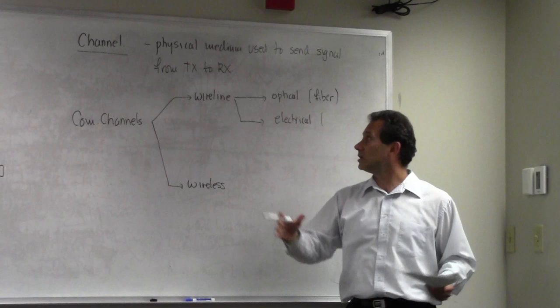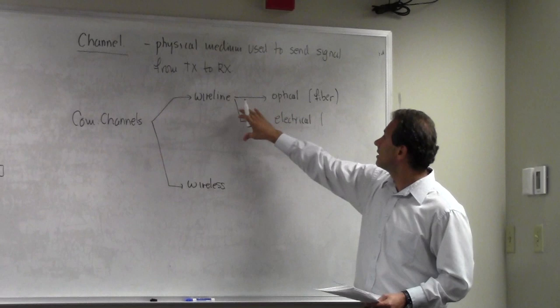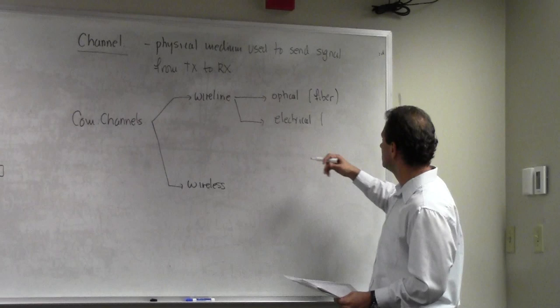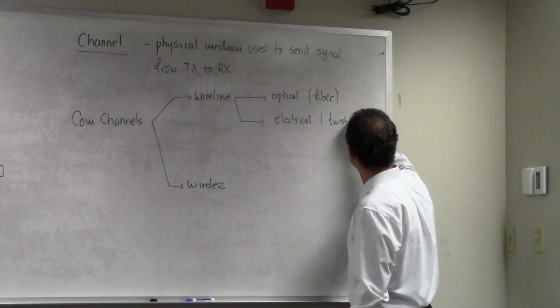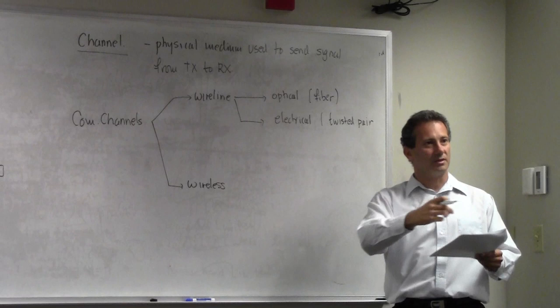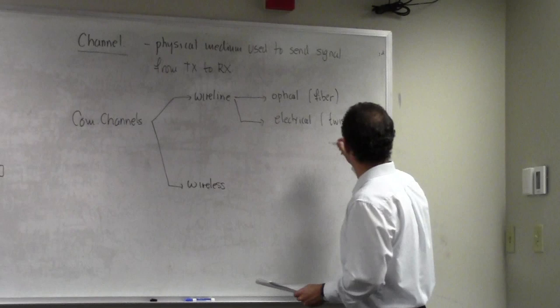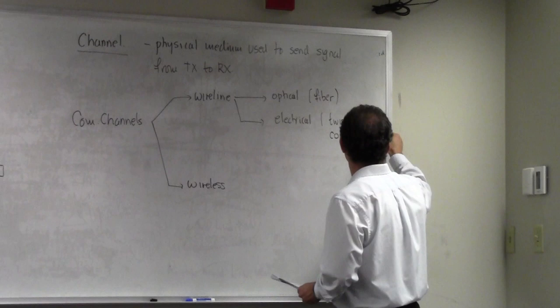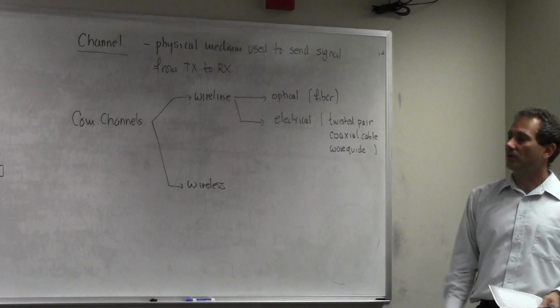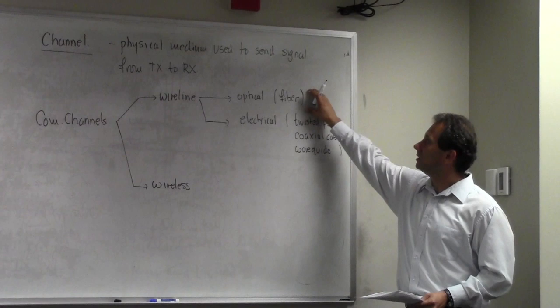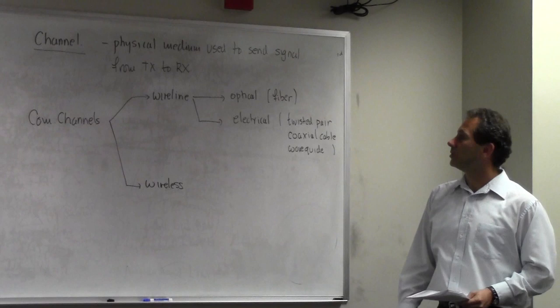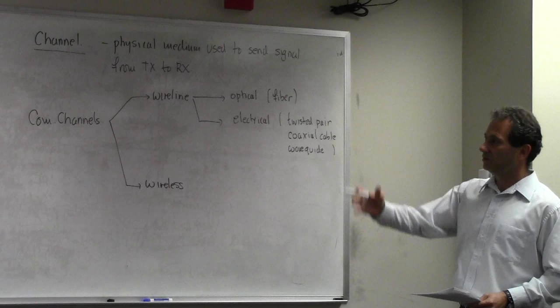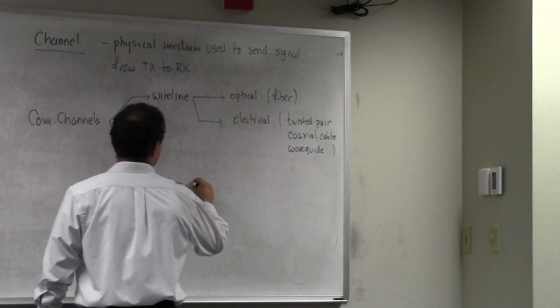In fiber channels, you use light — lasers and electromagnetic waves in the optical portion of the spectrum — to transmit. In wireline electrical channels, you use voltages and currents. Examples include twisted pair, coaxial cable, and waveguide. These are examples of wireline electrical channels with a physical connection in some form of wire between transmitter and receiver, using either optical signals or electrical signals to communicate.